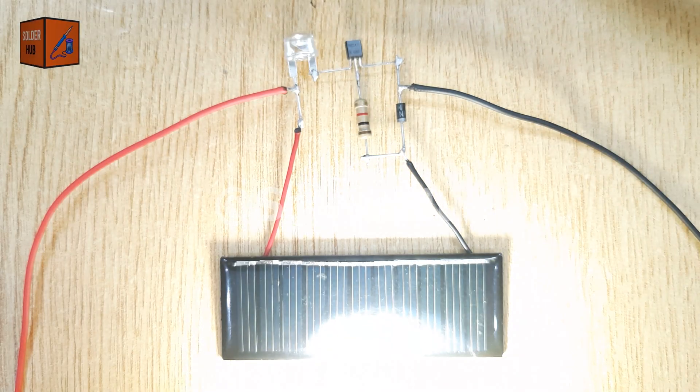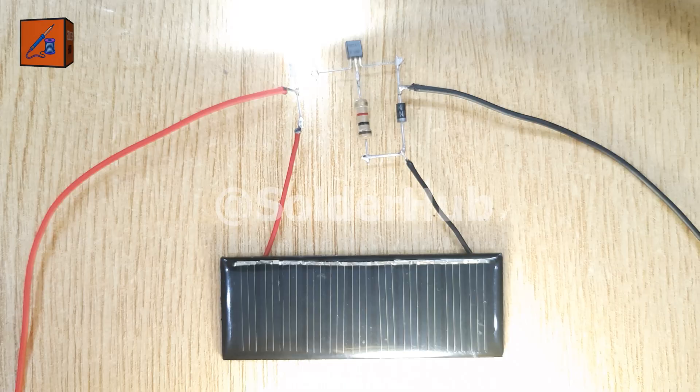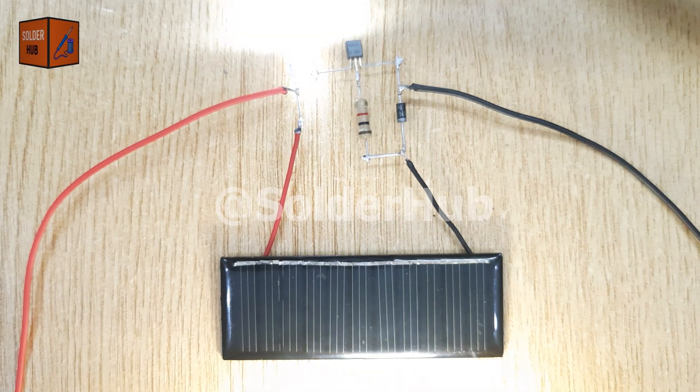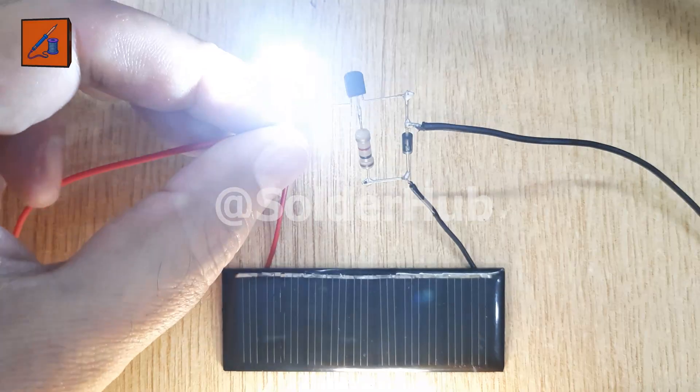This simple circuit is not only fun to build but also teaches an important concept of automatic lighting systems. You can use it for garden lights, small streetlights, home decoration, or DIY solar-powered projects.